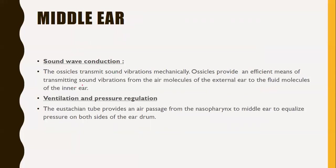The function of the middle ear is sound wave conduction. The ossicles transmit sound vibrations mechanically and provide an efficient means of transmitting sound vibration from the air molecules of the external ear to the fluid molecules in the inner ear. The inner ear contains perilymph and endolymph, so there is mechanical transmission of vibrations through the ossicles. The eustachian tube provides ventilation and pressure regulation, providing an air passage from the nasopharynx to the middle ear to equalize pressure on both sides of the eardrum.